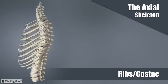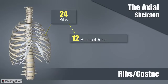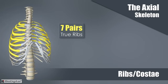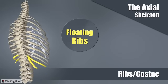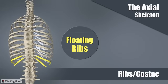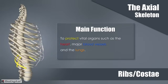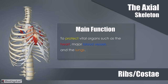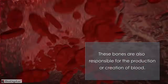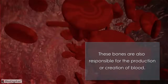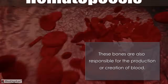The costi, or ribs, are composed of 24 ribs, or 12 pairs of ribs. There are seven pairs of true ribs and five pairs of false ribs, of which the last two pairs are called the floating ribs. The ribs' main function is to protect vital organs such as the heart, major blood vessels, and the lungs. These bones are also responsible for the production or creation of blood. The medical term for this is hematopoiesis.